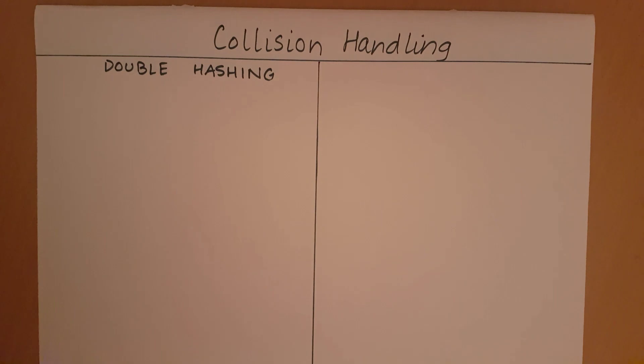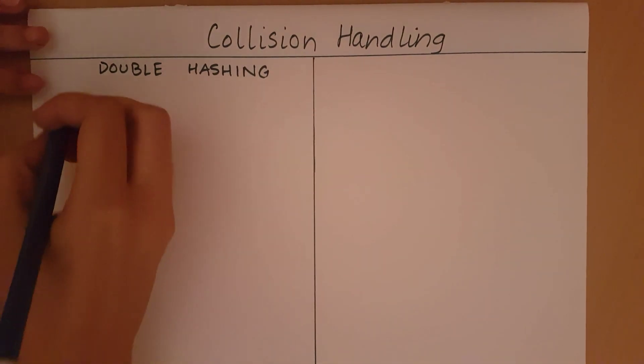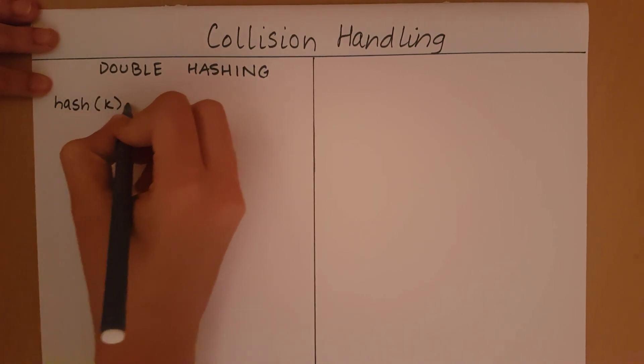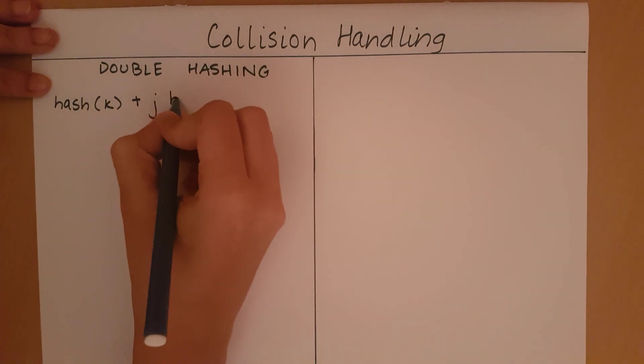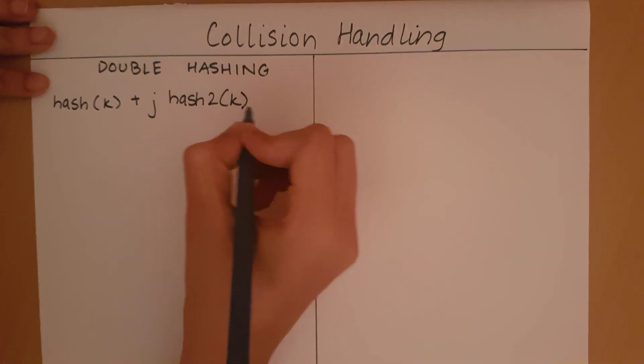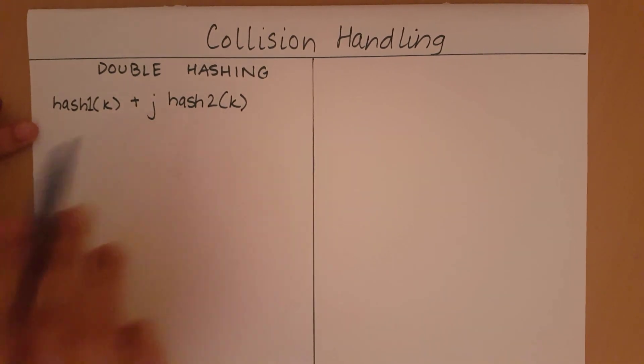In double hashing, we are going to iteratively check the indexes of the hash value of k plus j into another hash function, hash2 of k. I am going to have two hash functions, hash1 and hash2.